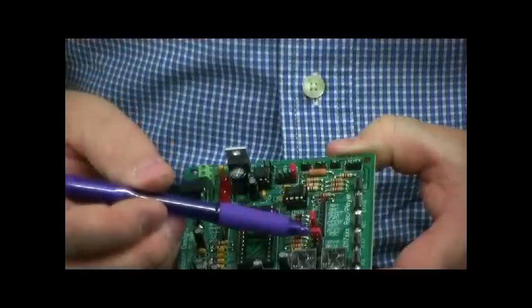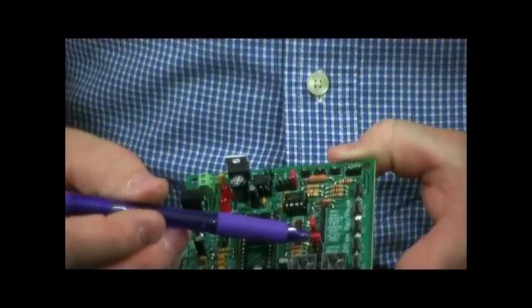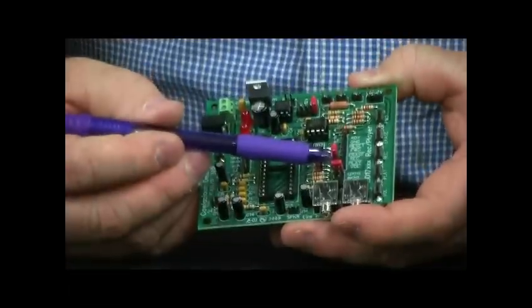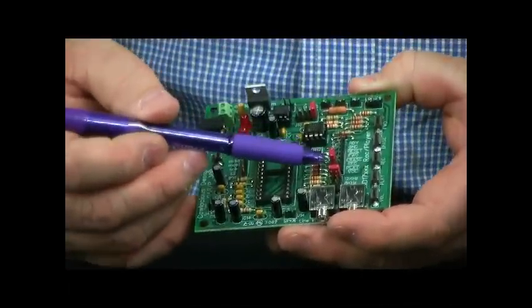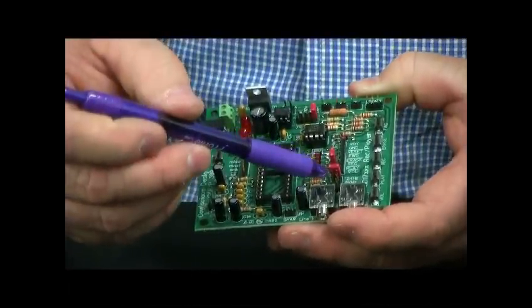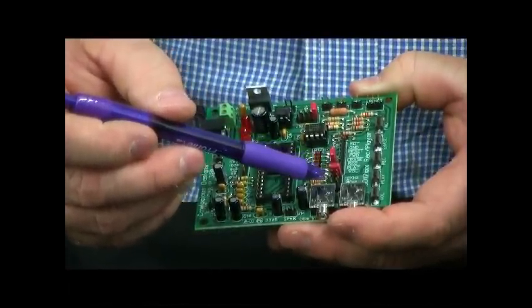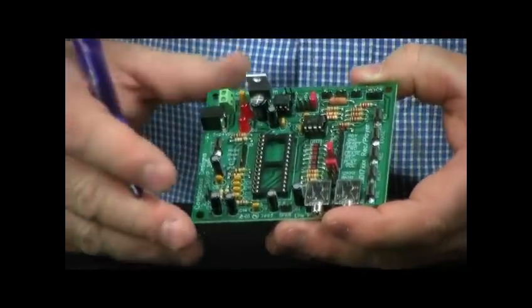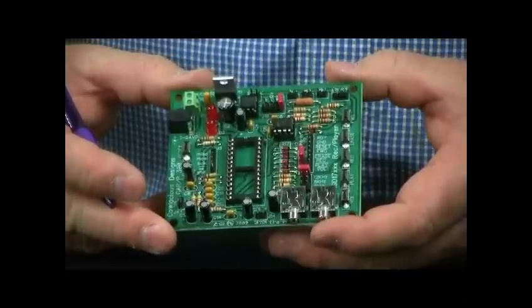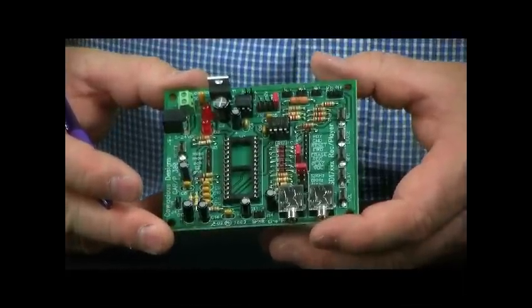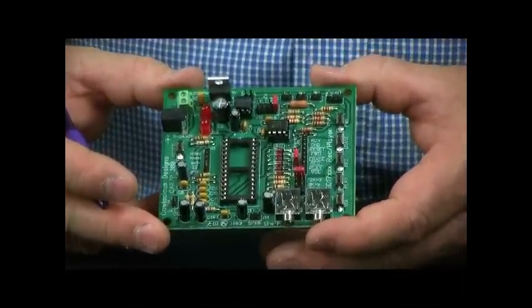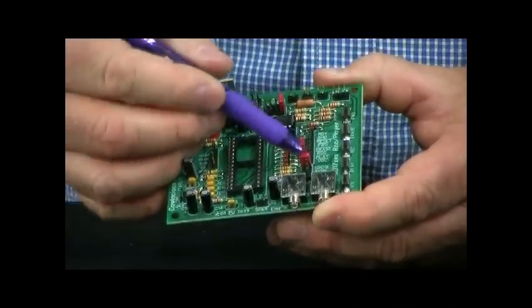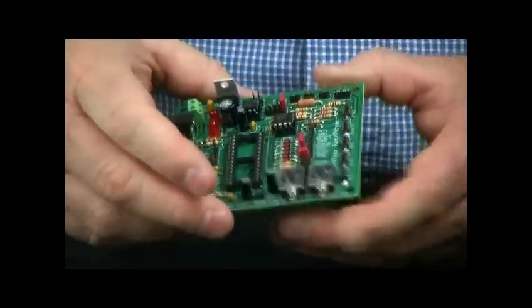And right below that, we have the shorting jumper for the sound quality, which is set for 12 kilohertz, which is the best sound quality that this chip can do. Then we have 8 kilohertz, 6 kilohertz, and 4 kilohertz. Every time you switch the speed, the lower the kilohertz, the lower the quality of sound, but the more time you have to record with. So during this demonstration, we're going to leave it at the 12 kilohertz setting, because that's the best.